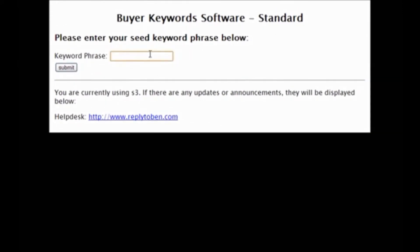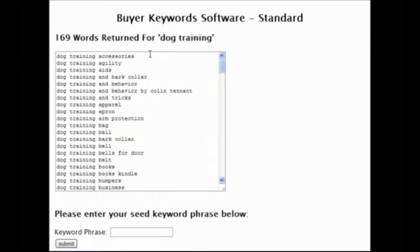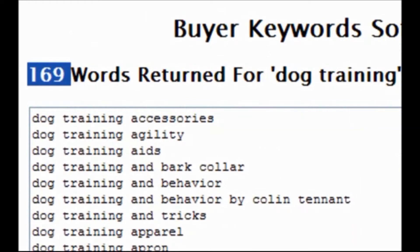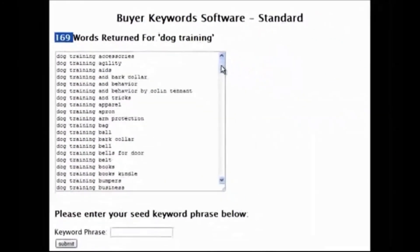Let me show you an example. In front of you is Buyer Keyword Software. We'll put in 'dog training' — it's really simple — just click Submit, and within a few seconds it returns all of those results which you would have had to do manually. There are 169 keywords for 'dog training,' and the great thing is you know these are keywords which people are actively searching for on Amazon and actively using to buy.